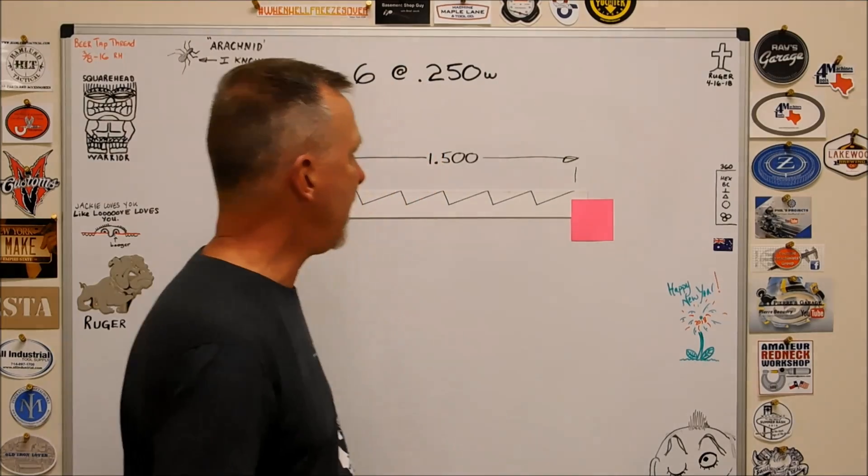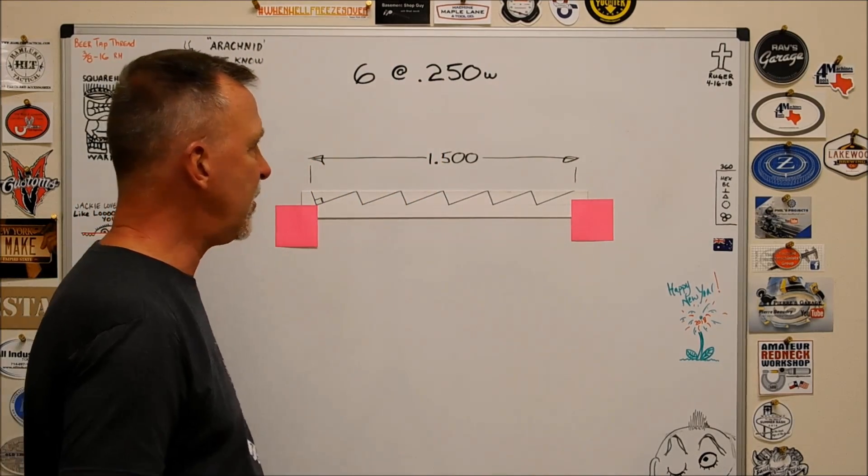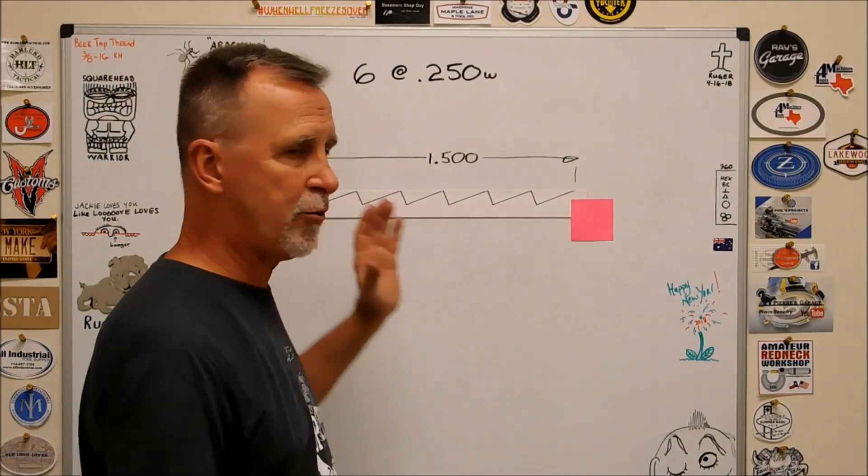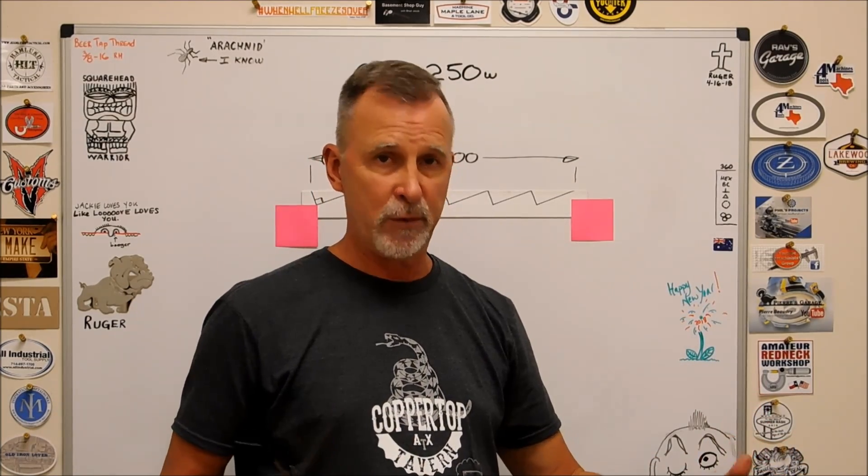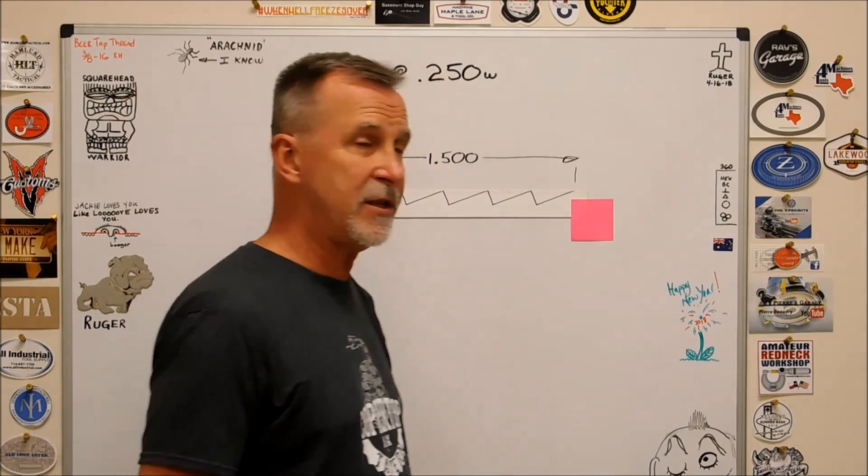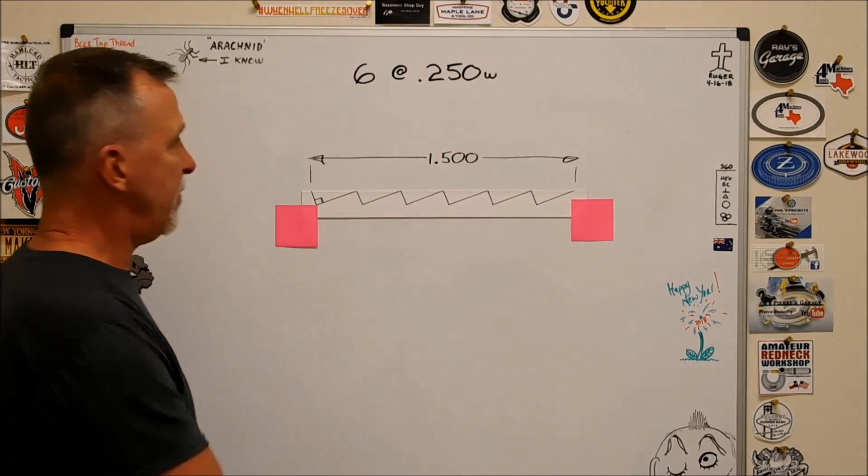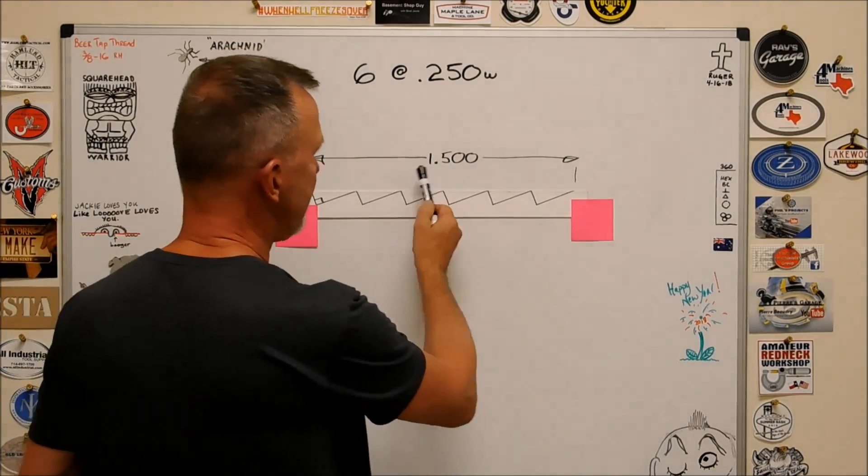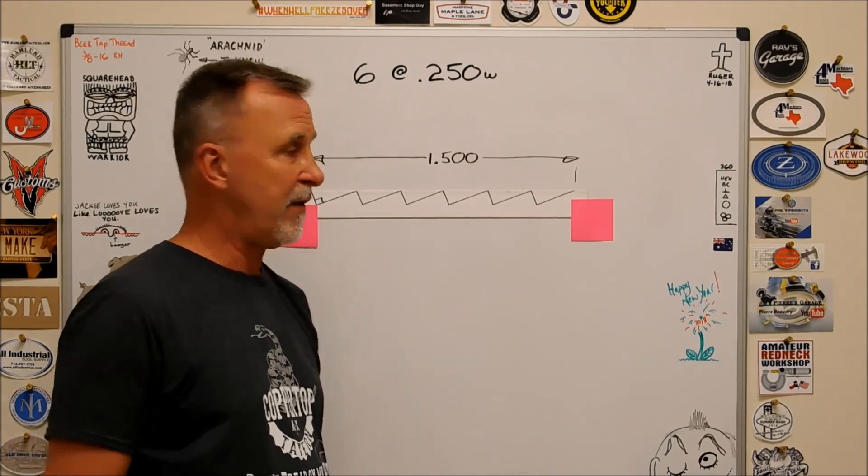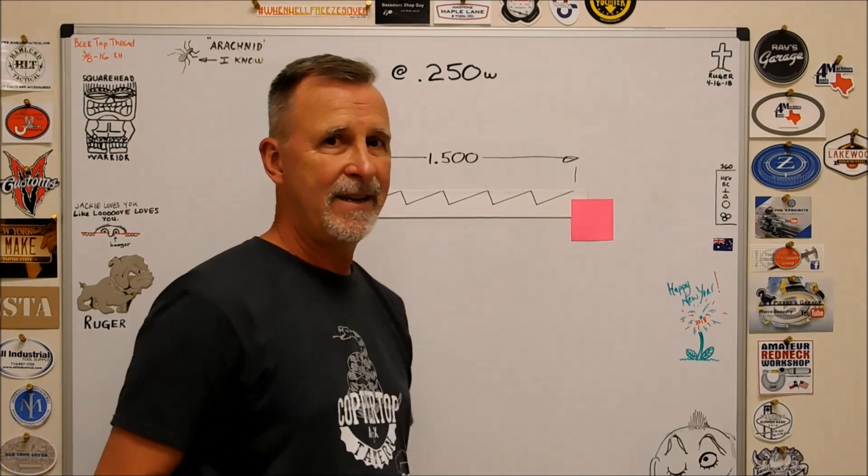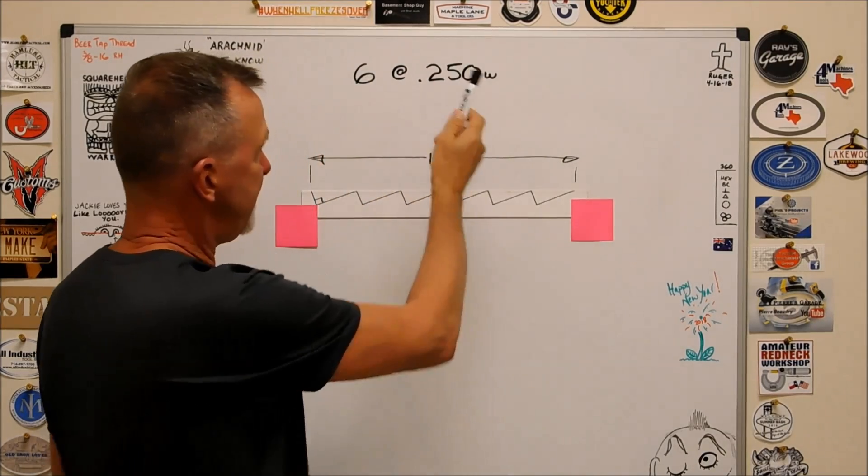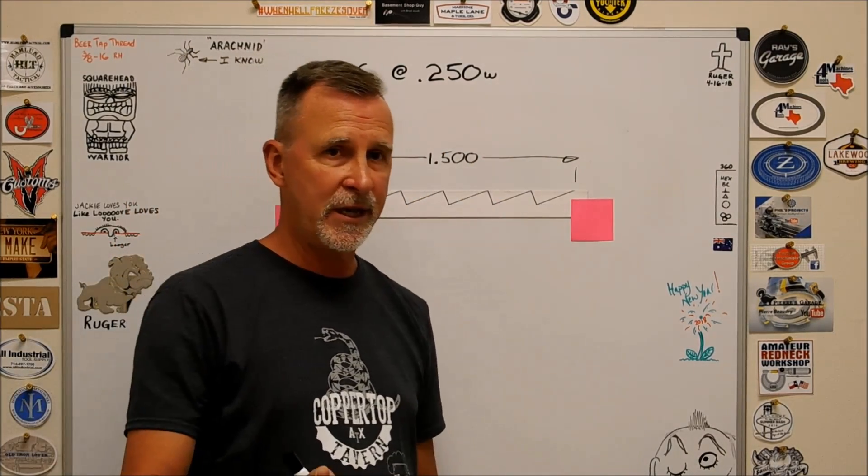Well, there's a way to approach that. The very first thing that you need to do is figure out how much region on your part you want to consume and how many steps you want to consume in it. So for demonstration purposes, we're going to use an inch and a half and we're going to put in six cuts. That makes it six at 250 wide.